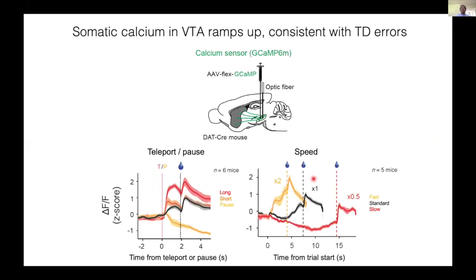These experiments show that the spiking activity ramps up and potentially explains ramping signals observed in axonal calcium signals. The reason for apparent discrepancy may be due to difference in fast and slow measurements. If this was true, somatic calcium signals should also exhibit ramping signals. Indeed, calcium signals measured at the soma in the VTA showed ramping signals consistent with TD errors.